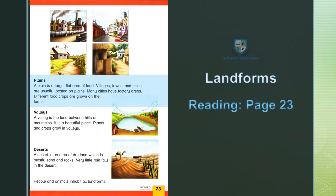Plains — Maidan. A plane is a large flat area of land. Maidan zameen ka ek bohut bara hamwar alaqa hai.